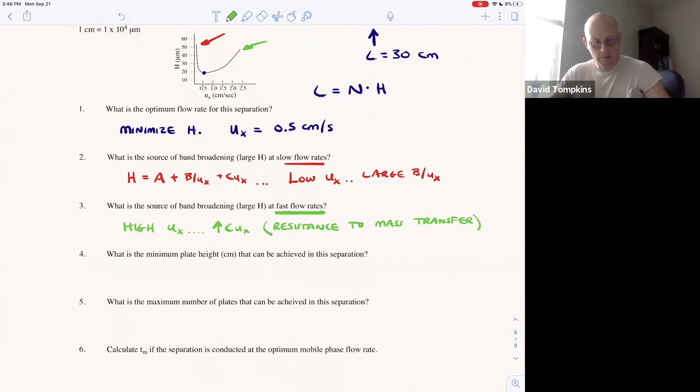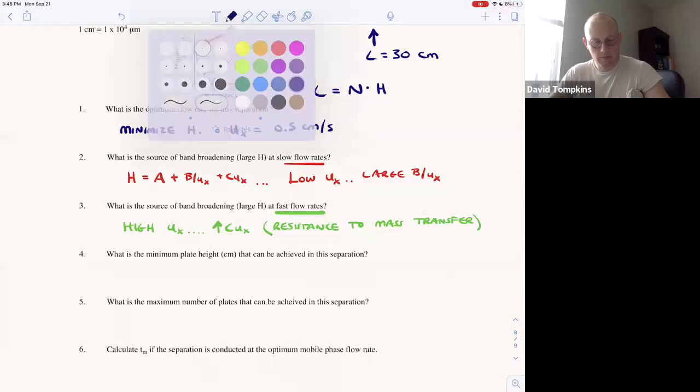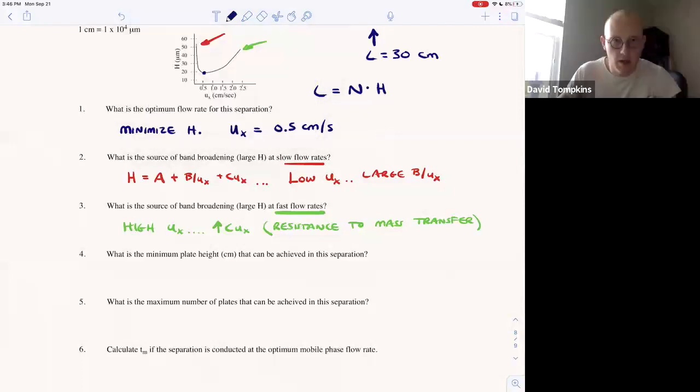So the minimum plate height we said was at the optimum flow velocity, which was about 20 micrometers. And you can convert micrometers to centimeters by dividing by 10,000.